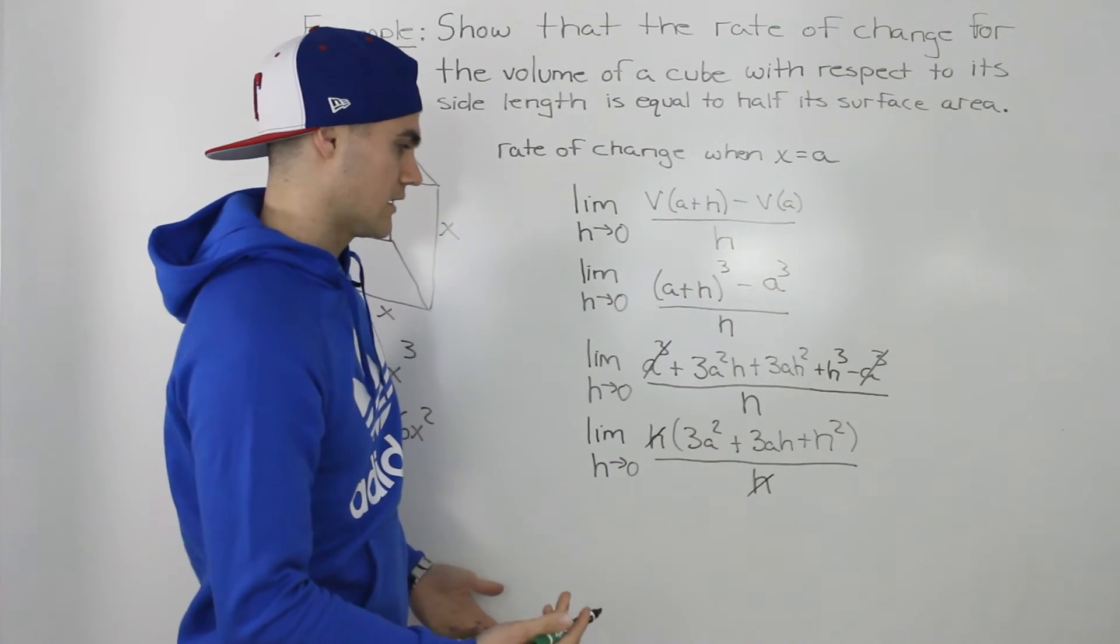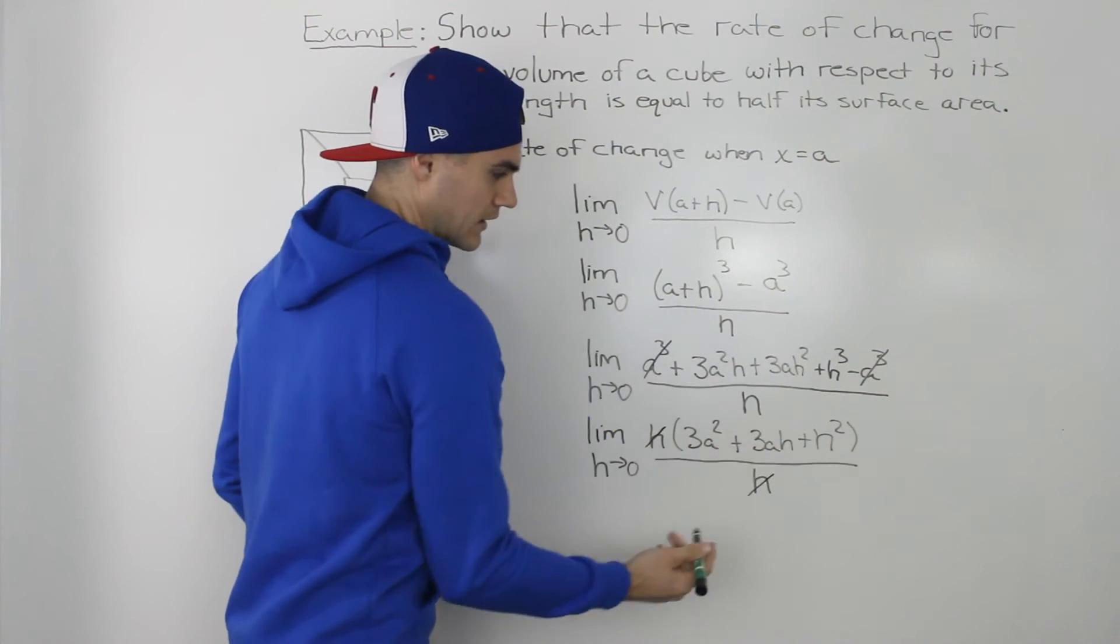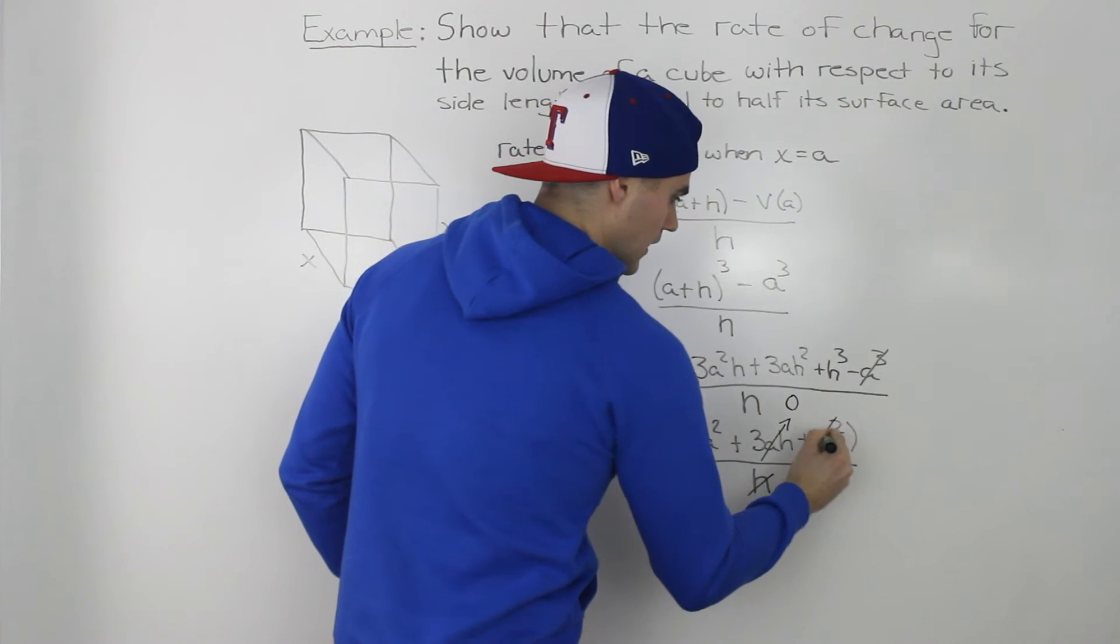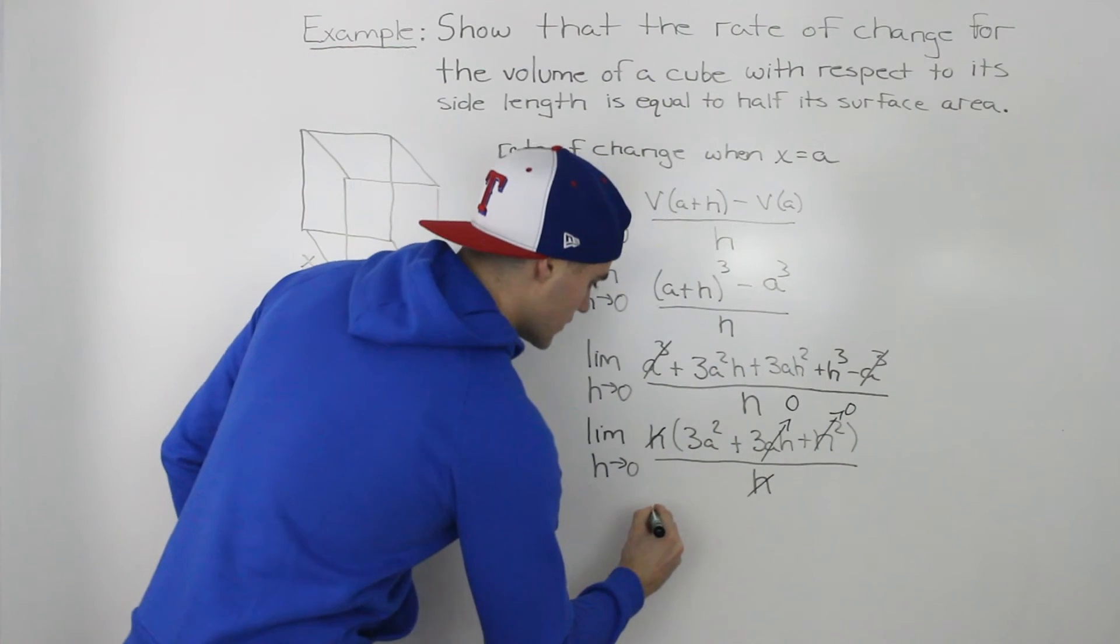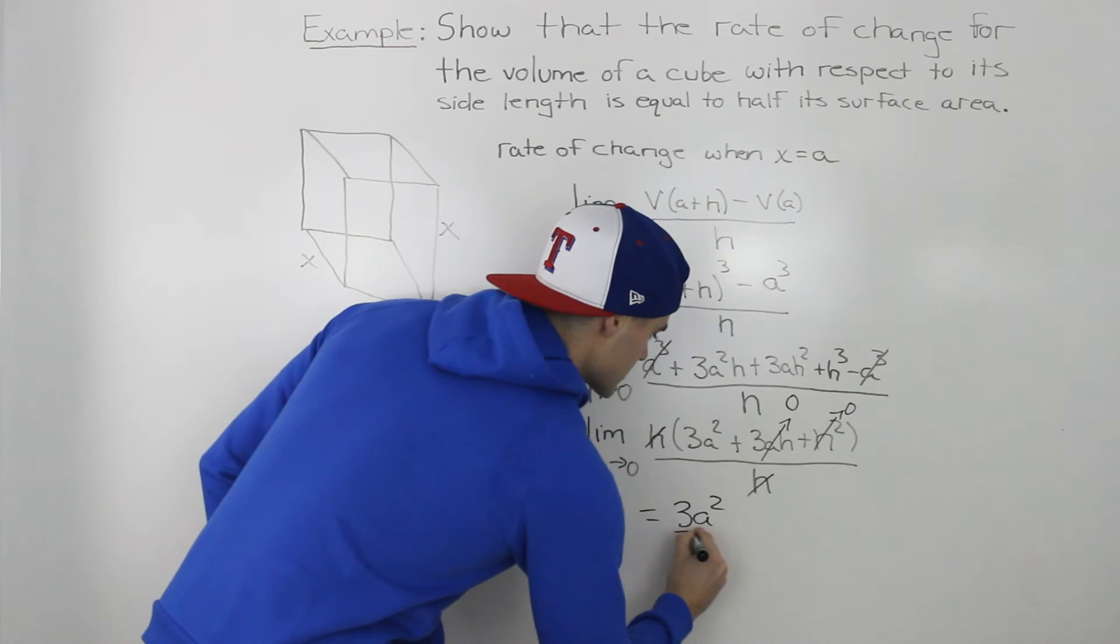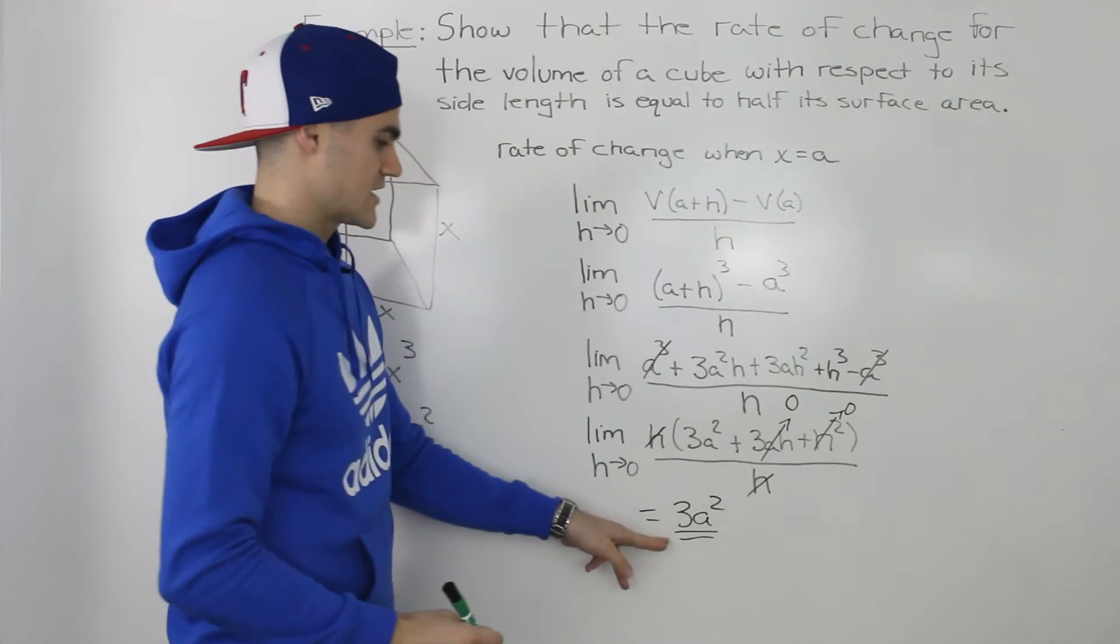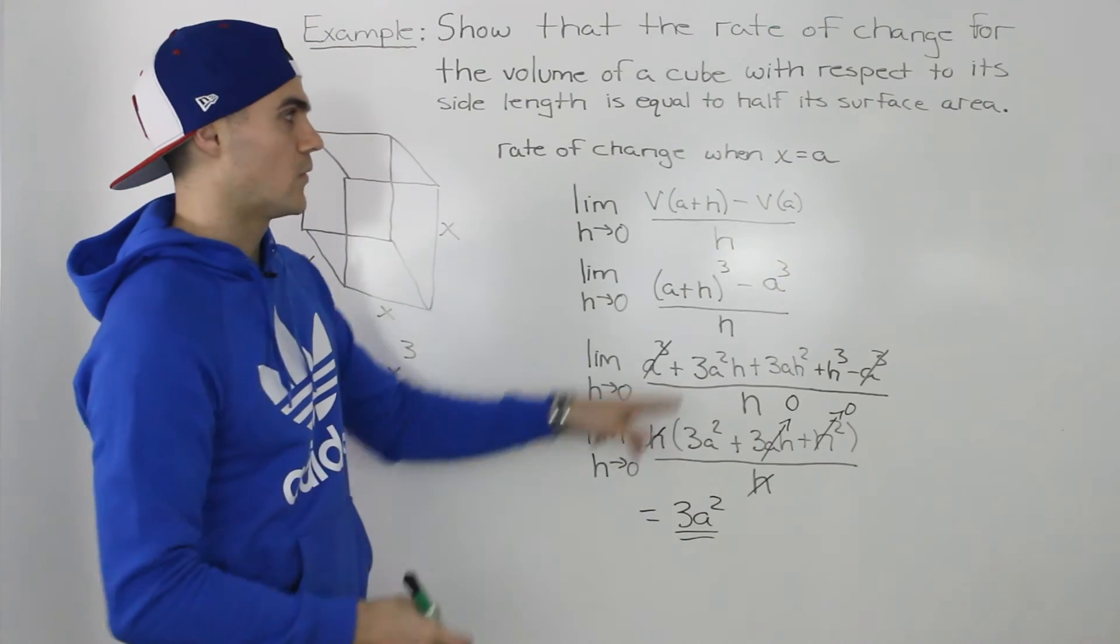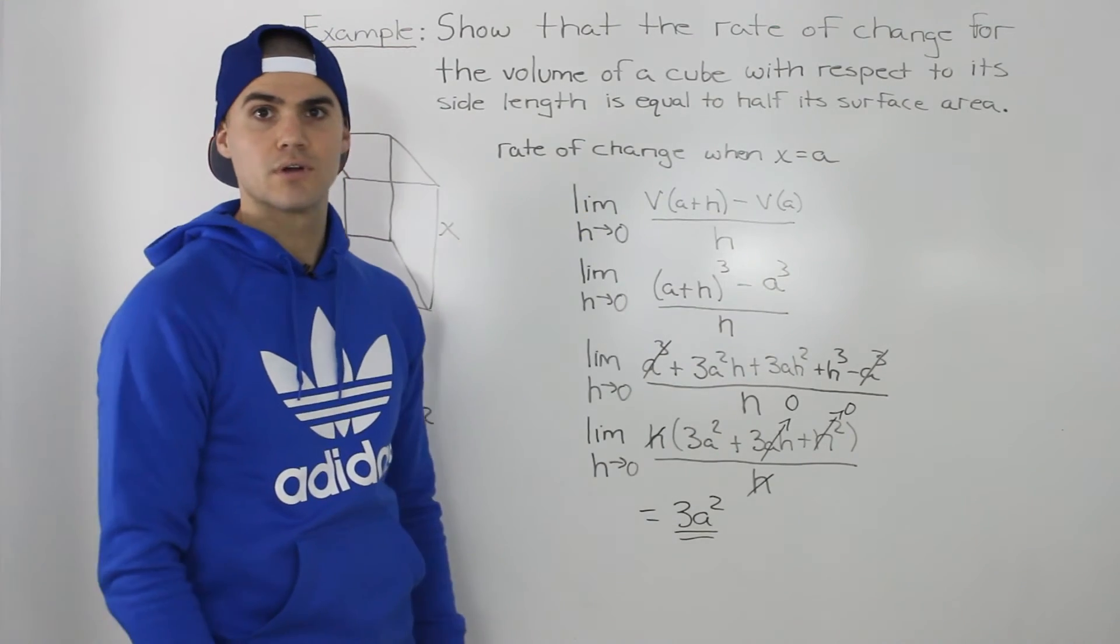And now we can plug in zero for h with this remaining expression in the brackets. So if we do that this term would go to zero and then this term would go to zero. So our final answer would just be 3a squared. So that represents the general expression for the rate of change for the volume of a cube when the side length is equal to a.